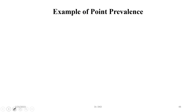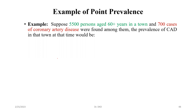For example, for point prevalence: suppose 5500 persons aged 60 plus years in a town or community, and 700 cases of coronary artery disease were found among them. The prevalence of coronary artery disease (CAD) in that town at that time would be calculated as follows.